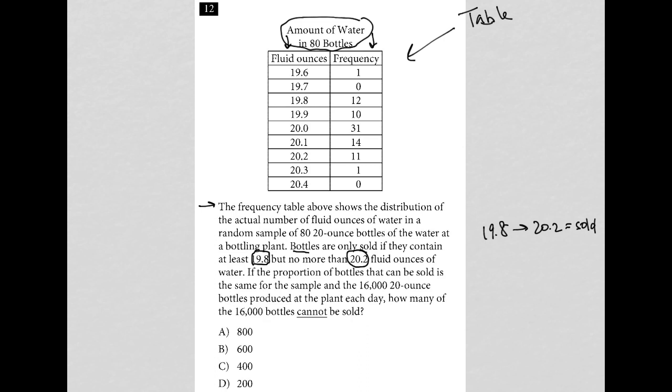So 19.6 is below the threshold, so that can't be sold. 19.7, we only had zero of those. But anyway, if there were 19.7, that could also not be sold. 19.8 through 20.2, all of those are good. But this one at 20.3 cannot be sold. And of course, the zero that we have there for 20.4. So out of the 80 bottles, it's really only one, two that cannot be sold.